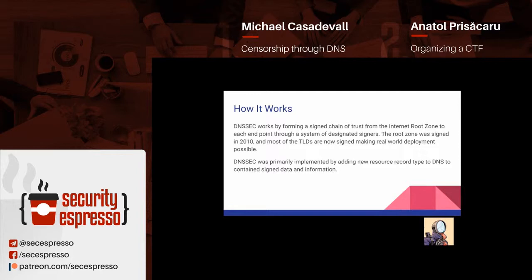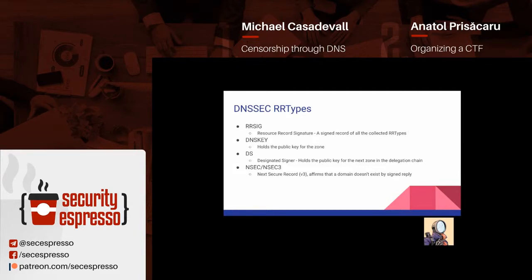DNSSEC was primarily implemented by adding new resource types to DNS containing signing data. Specifically, it added RRSIG — the resource record signature — which is a signed hash of the RRset records. You have DNSKEY, which has the public key of a given zone. DS — designated signer — holds the public key for the next zone in the delegation chain. And we have NSEC and NSEC3 — next secure record — which affirms that a domain does not exist by signed reply. This is to prevent faking NXDOMAIN messages.